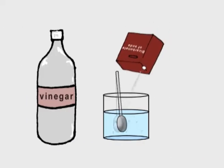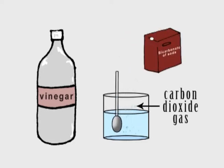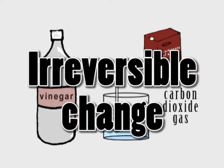If you mix bicarbonate of soda with vinegar, it produces bubbles of the gas carbon dioxide. The fact that a new material has been formed is a sign that this is an irreversible change.